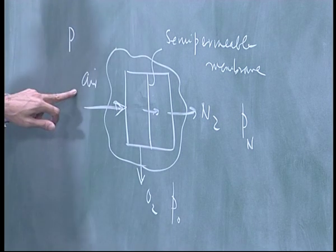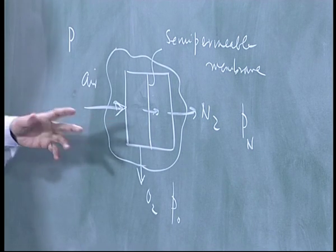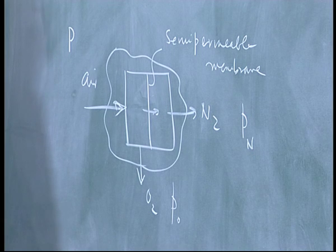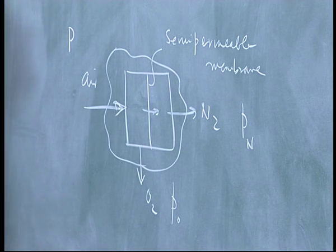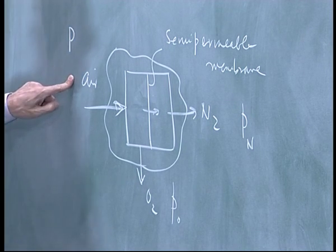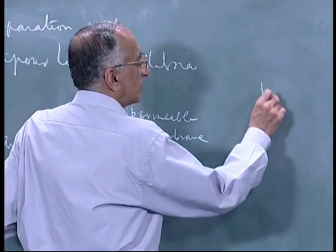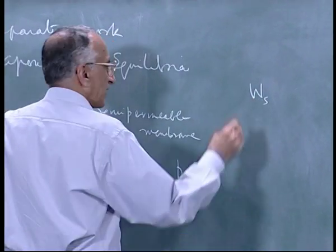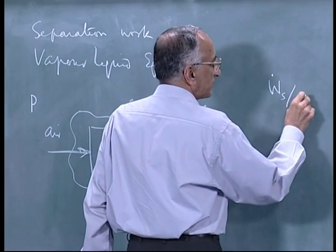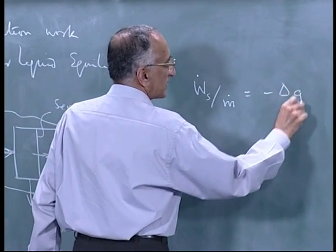So if I take one mole of air, let us assume 79% is nitrogen, 21% is oxygen. All I am saying is I have a mass balance. I have delta G. You know that Ws dot by M dot is equal to minus delta G, isothermal.